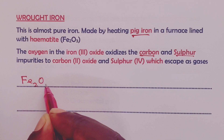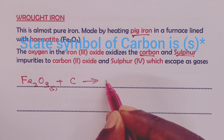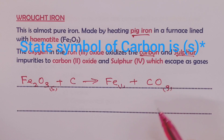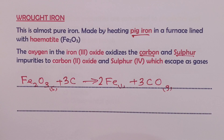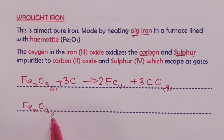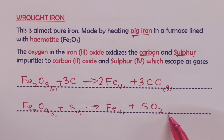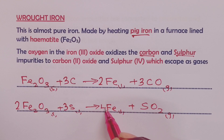The equation for the oxidation is as follows: iron(III) oxide (hematite) reacts with carbon, an impurity in pig iron, to give iron in liquid state and carbon monoxide gas. This equation is balanced with a 3 on carbon, a 2 on iron, and a 3 on carbon monoxide. For sulfur, iron(III) oxide reacts with sulfur to give liquid iron and sulfur dioxide gas, balanced with a 3 on iron and a 3 on sulfur dioxide.